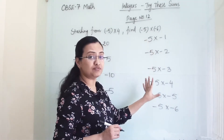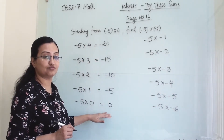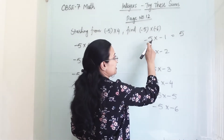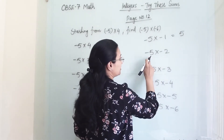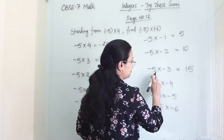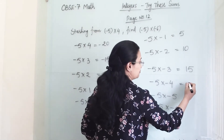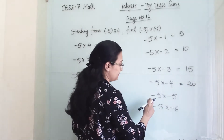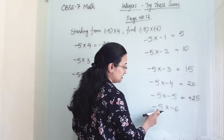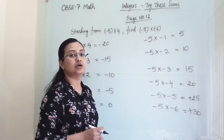Now the answer changes because two negative signs are present. Earlier with one negative sign, the answer was negative. (-5) × (-1) gives +5, because minus × minus becomes plus. 5 × 2 = 10, and minus × minus becomes plus. So +10. Similarly, +15 because both are negative. (-5) × (-4) gives +20. (-5) × (-5) gives +25. Then 5 × 6 = 30, and minus × minus becomes plus, so we get +30.